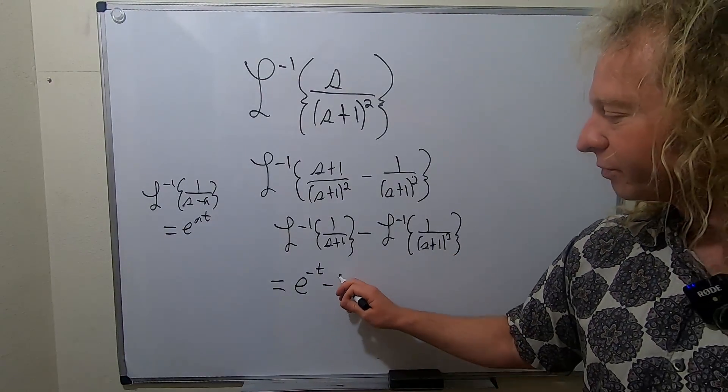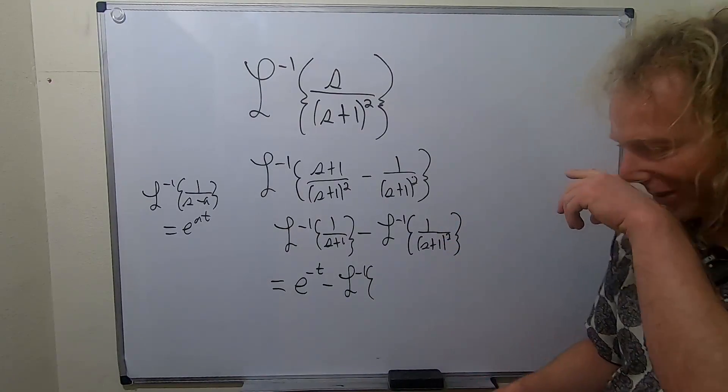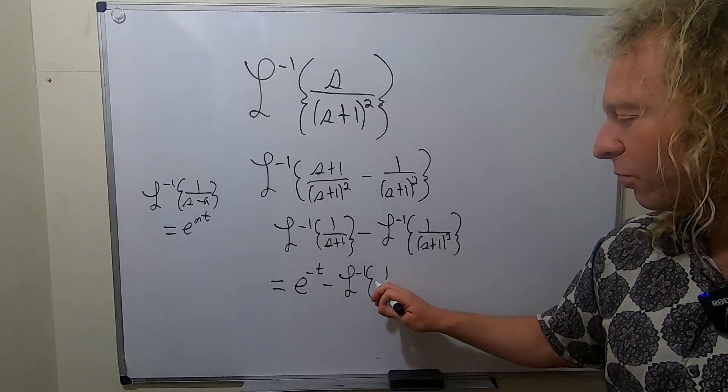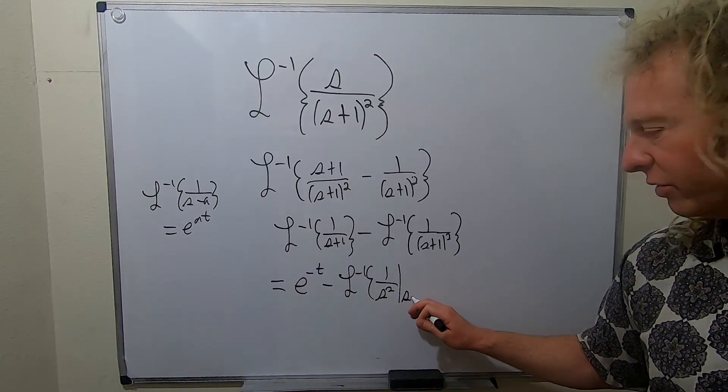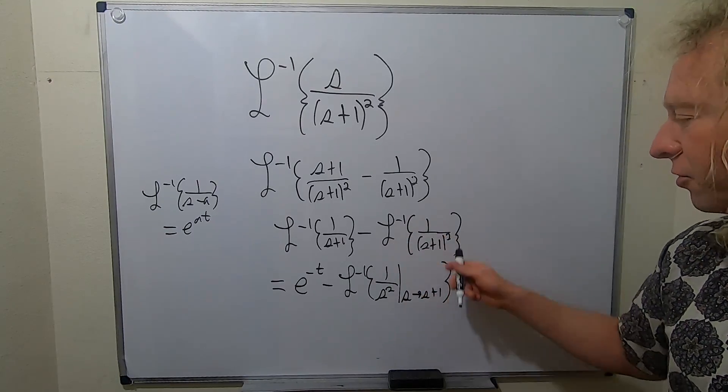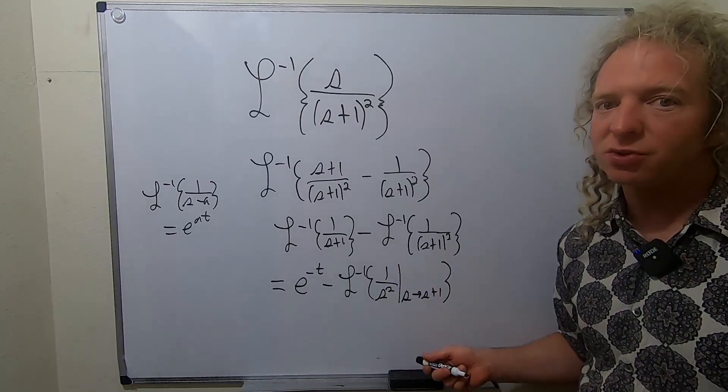But we do have one for 1/s². So what we do is we write 1/s² and we do a shift. We go from s to s+1. That's called the first translation theorem. When you do a shift like this, this is going to turn into an exponential in the next step.